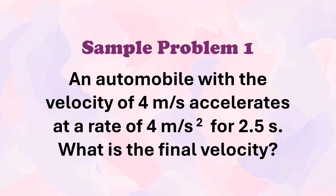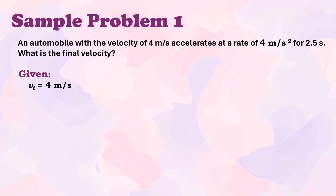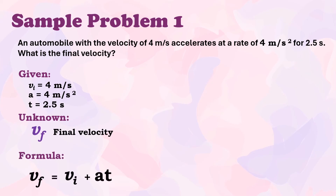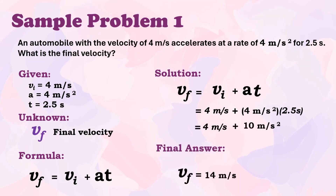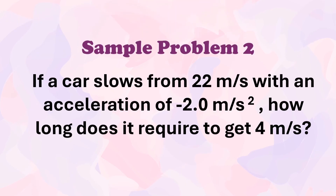Sample problem: An automobile with an initial velocity of 4 meters per second accelerates at a rate of 4 meters per second squared for 2.5 seconds. What is the final velocity? Given: initial velocity = 4 m/s, acceleration = 4 m/s², time = 2.5 s. Using the formula — final velocity equals initial velocity plus acceleration multiplied by time — we get: 4 + (4 × 2.5) = 14 meters per second.